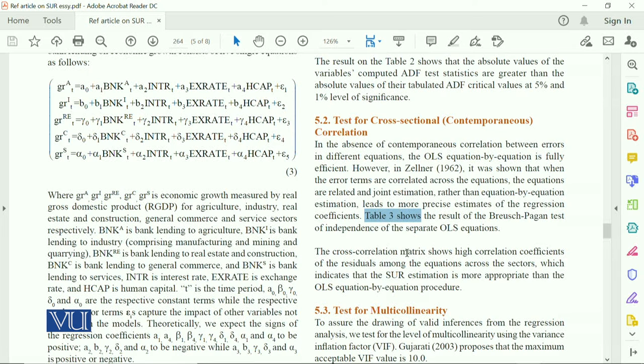In Table 3, we show the associations between variables. The article explains that the cross-correlation metric shows high correlation coefficients of the residuals among equations across sectors, which indicates that SOAR estimation is more appropriate than the OLS equation-by-equation procedure. I have discussed that SOAR applies your best approach, which is FGLS, where you can check the errors.